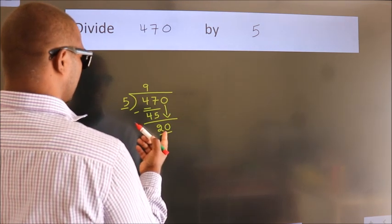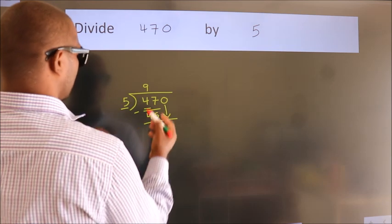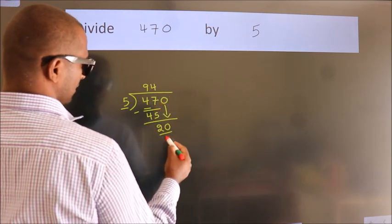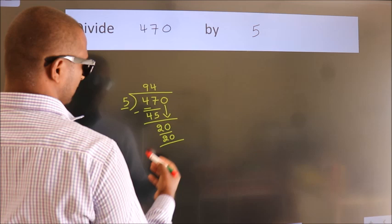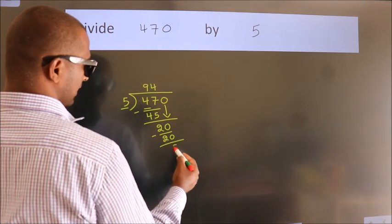When do we get 20? In the 5 table, 5 fours is 20. Now we subtract. We get 0.